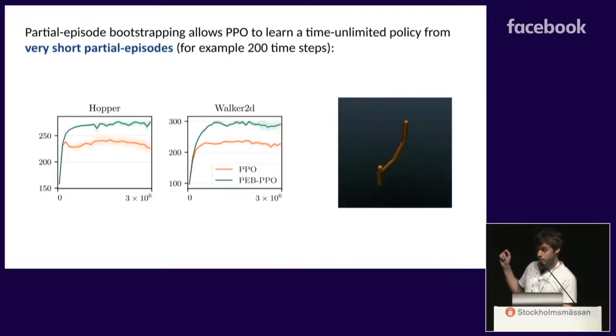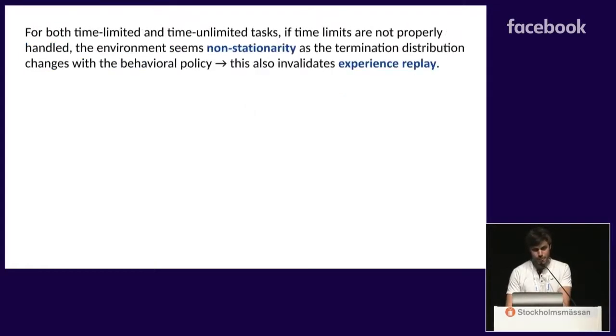Okay, you can also apply this to, again, PPO. And, for example, on Hopper and Walker, you can train with very short partial episodes. Let's say 200 time-steps, which corresponds to, for example, one or two seconds of interaction. And we show that you can actually learn a very robust policy that learns to hop for more than two hours. We actually have a video on YouTube that shows the policy, even if it's not that interesting.